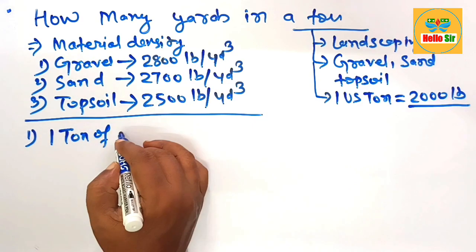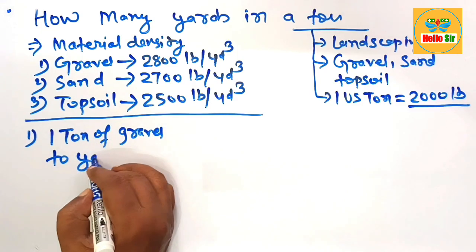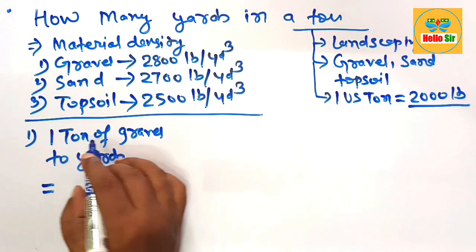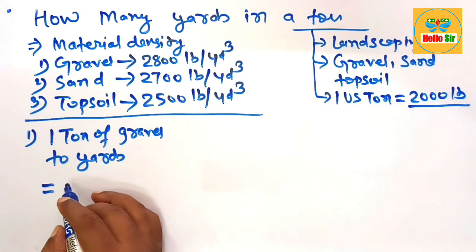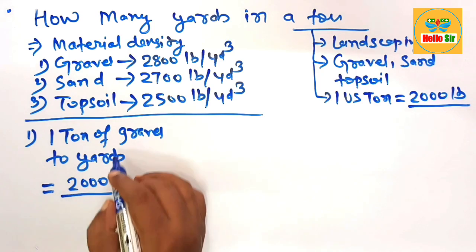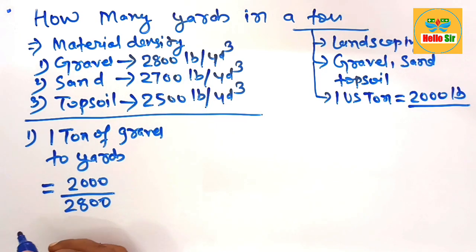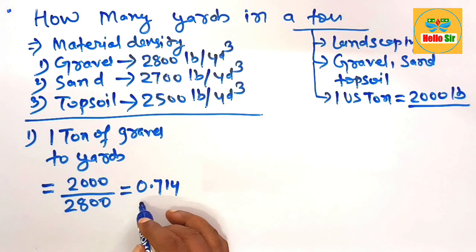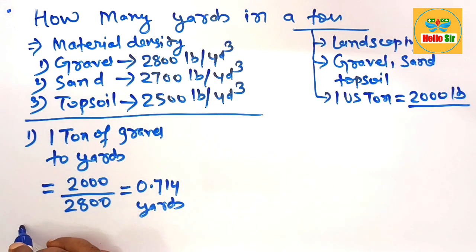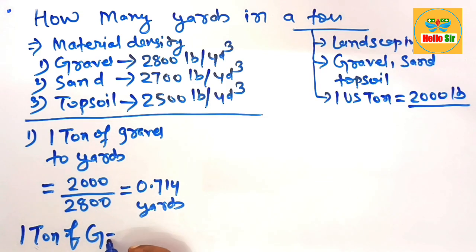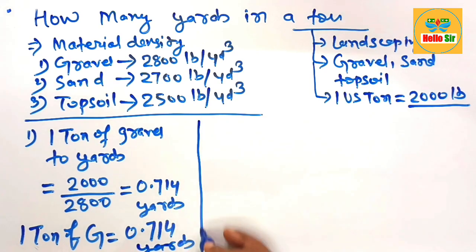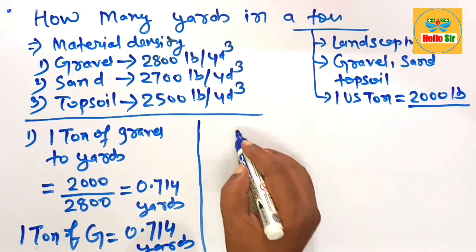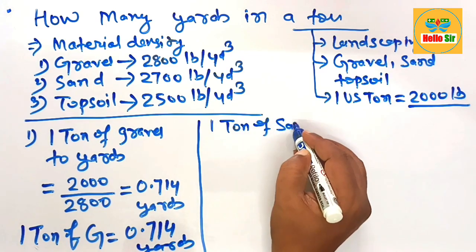Now, to figure the number of yards in one ton of gravel: one ton is two thousand pounds, and the material density for gravel is twenty-eight hundred pounds per yard. After division, this comes to about 0.714 cubic yards. It means one ton of gravel is equal to 0.714 cubic yards.